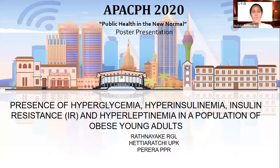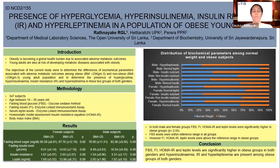As all of you know, obesity has become a global health burden and young adults are also at risk of these metabolic conditions. The adverse outcomes of obesity are hyperglycemia, increased insulin levels, and insulin resistance. Apart from that, leptin resistance also emerges with obesity.